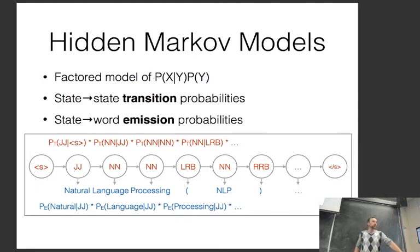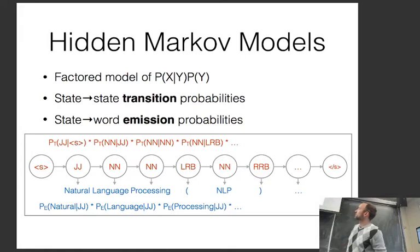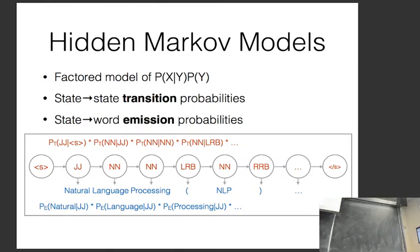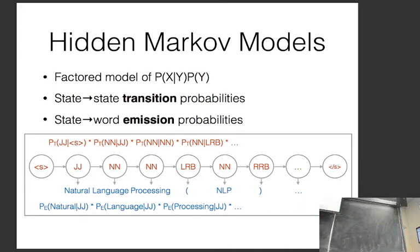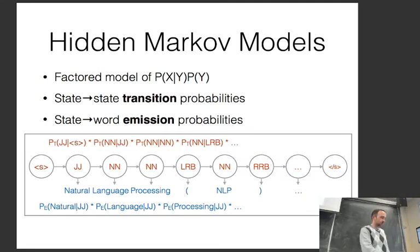A better approach, covered in algorithms for NLP, is an HMM-based POS tagger. You create a factored model of P(X|Y) and P(Y), where P(Y) is a state-to-state transition probability over POS tags — an order-one Markov chain. You also have emission probabilities such as the probability of emitting 'natural' given a particular tag. There's a typo in the slides: the second two emission probabilities should be NN, not JJ.